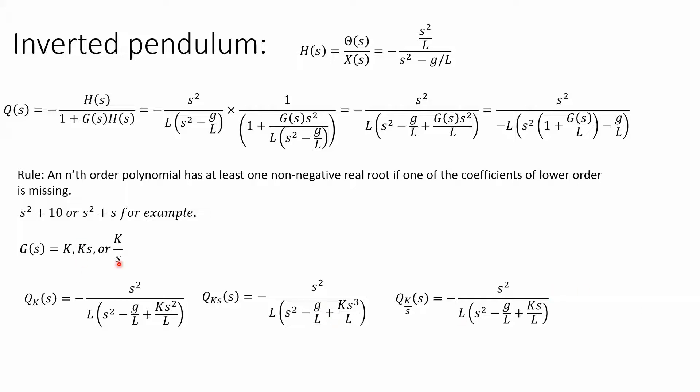Now we put in K/s, the integral. We have s² - g/L, K/L, and s. Now this is interesting. I have s², I have s, and I have s⁰. Can this be made stable? Let's find out.